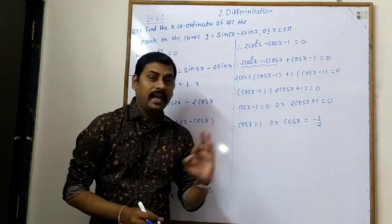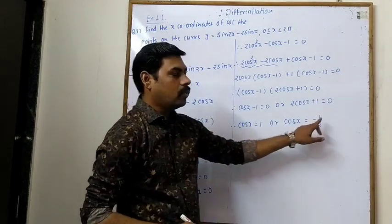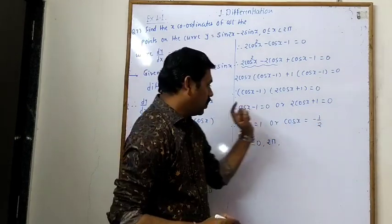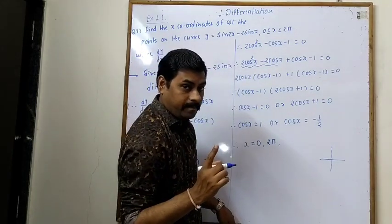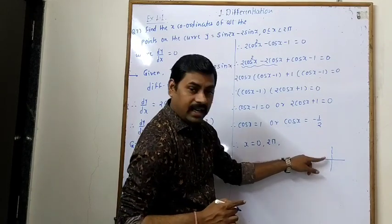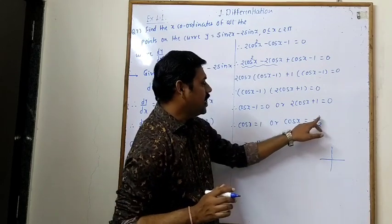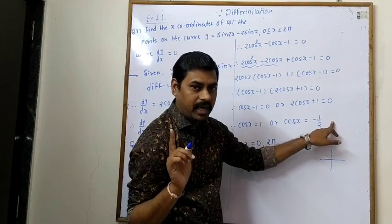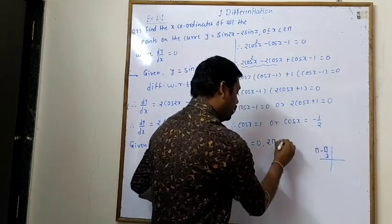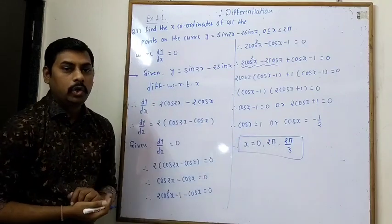Factorizing: (cos x − 1)(2cos x + 1) = 0. So cos x = 1 or cos x = −1/2. Cos x = 1 gives x = 0 or 2π. Cos x = −1/2: since cosine is negative in second and third quadrants, and the reference angle is π/3 (60°), we get x = π − π/3 = 2π/3. So the x-values are 0, 2π, or 2π/3.